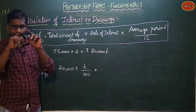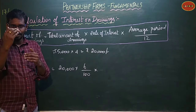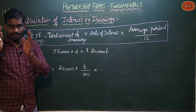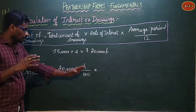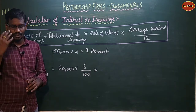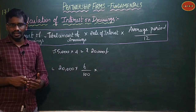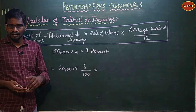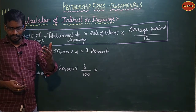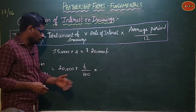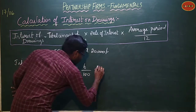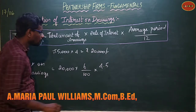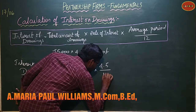As explained in the previous video with the table - for monthly beginning, middle, and end, and quarterly, half-yearly cases - referring to that table: for quarterly withdrawal at the end of each quarter, the average period is 4.5 months. So we use 4.5 divided by 12.